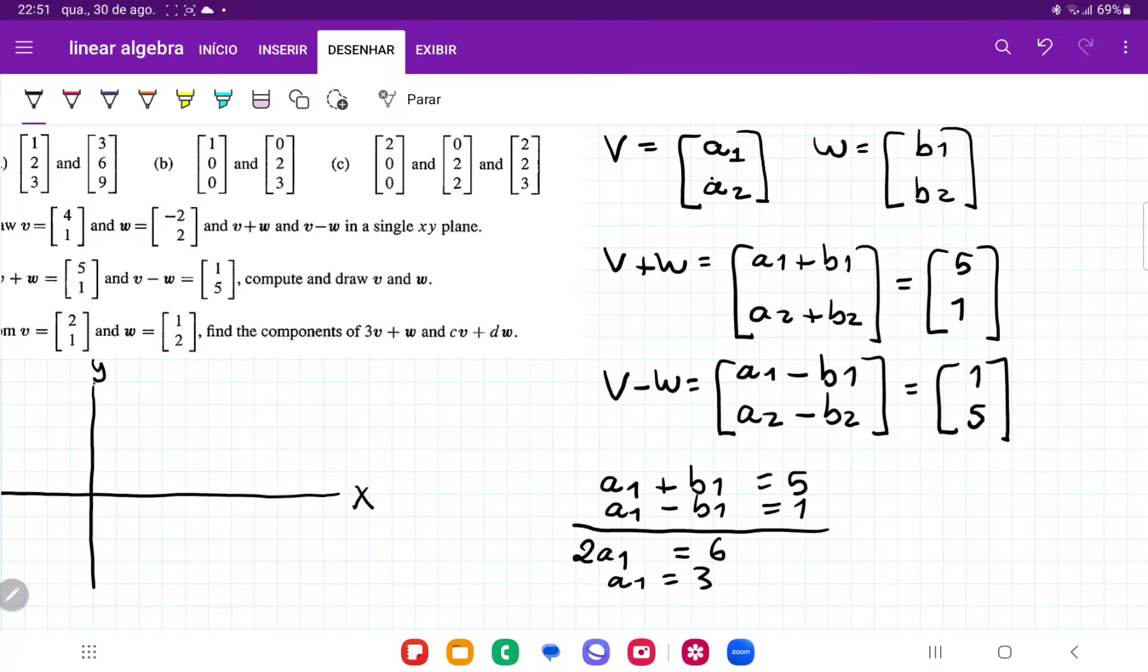But so if a1 is equal to 3, we have that a1, which is 3, plus b1 is equal to 5. So if we subtract 3 from both sides, we're going to have that b1 is equal to 2.